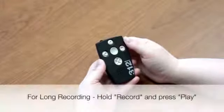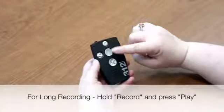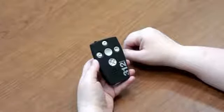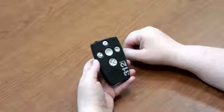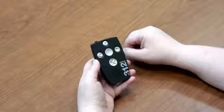In order to record a long message, simply press the record button and press play. The device will make a dual tone noise and will continue to record without having to keep the record button pressed. To end the recording, simply press and release the record button.